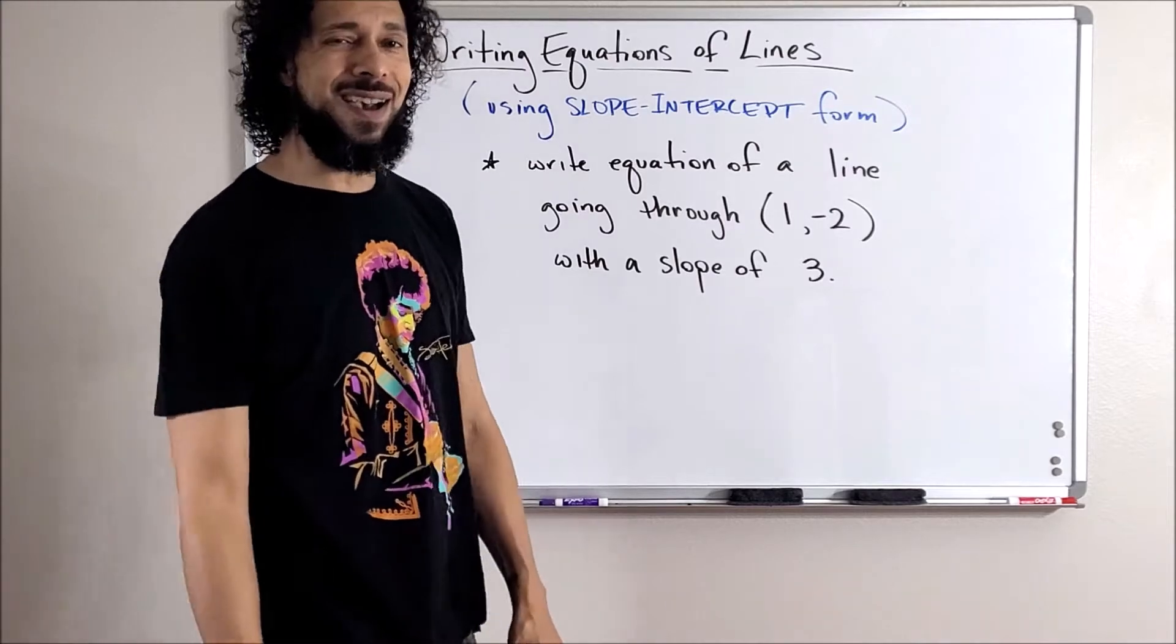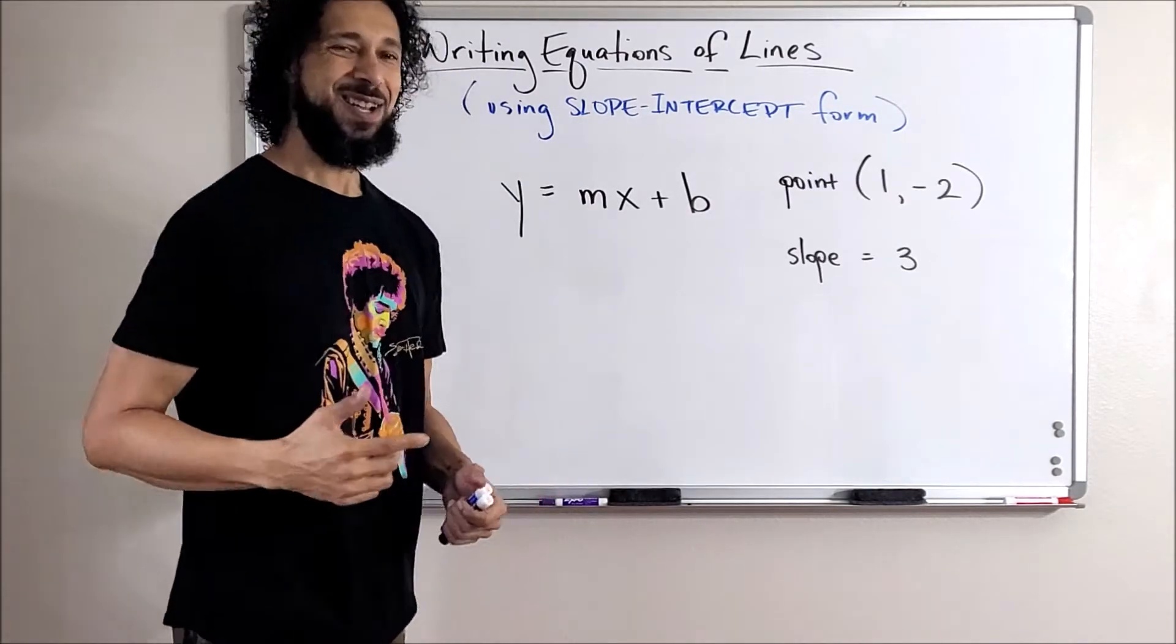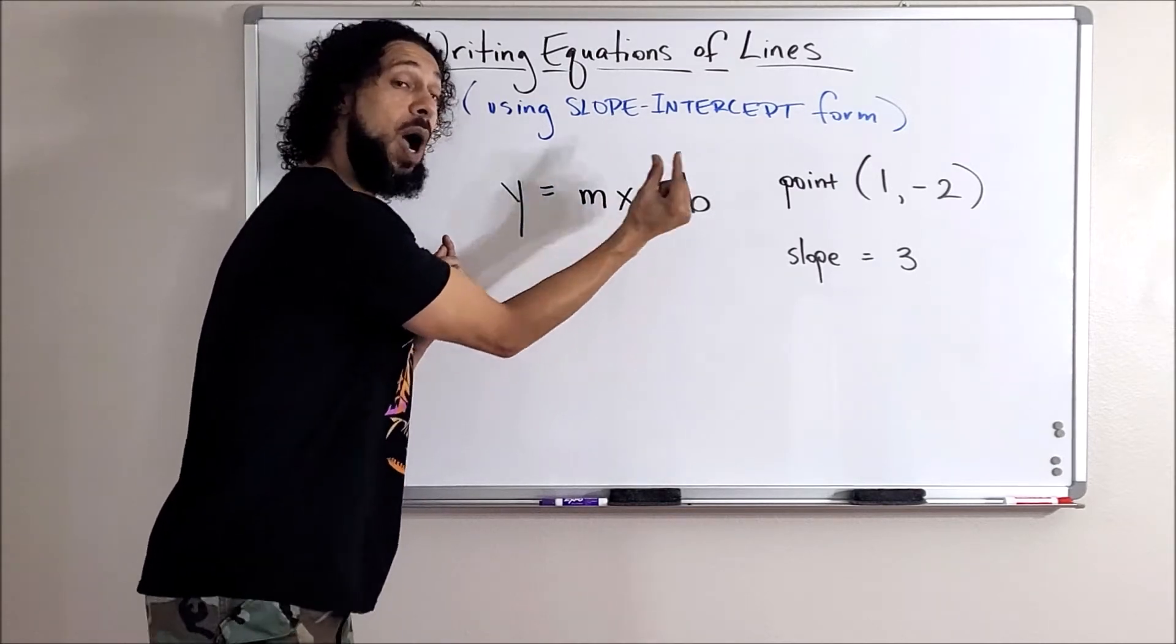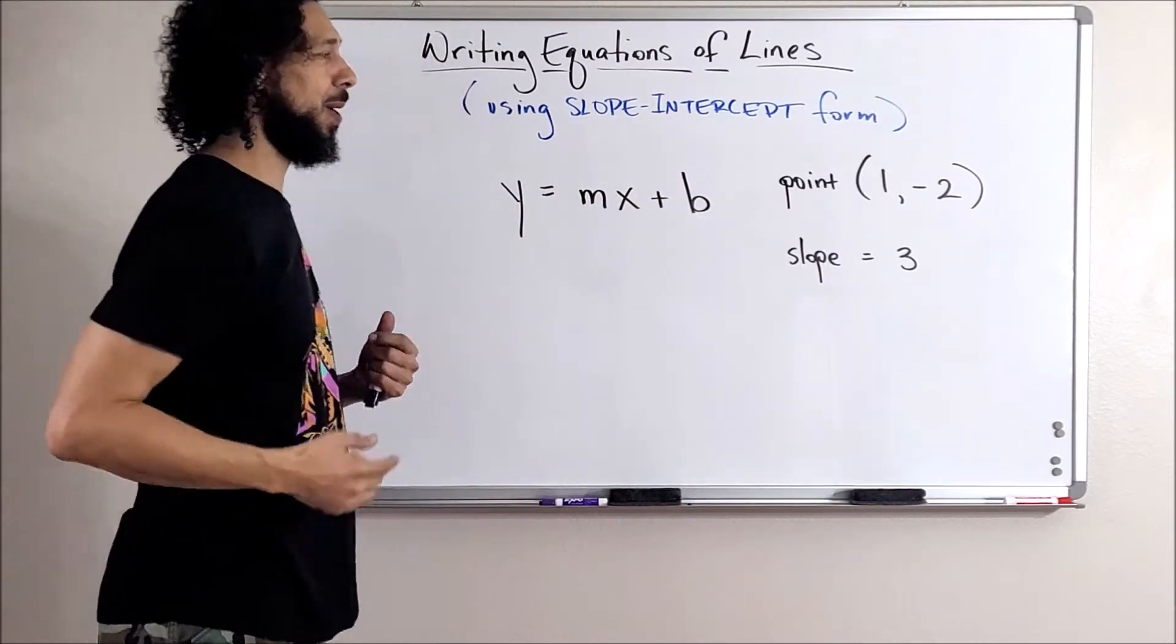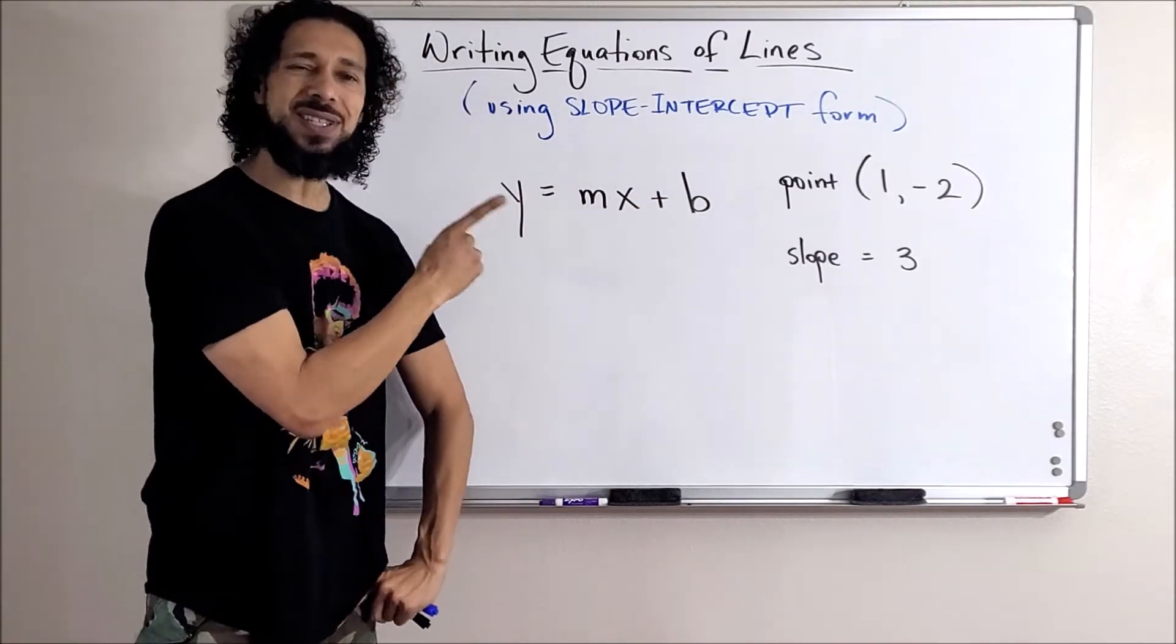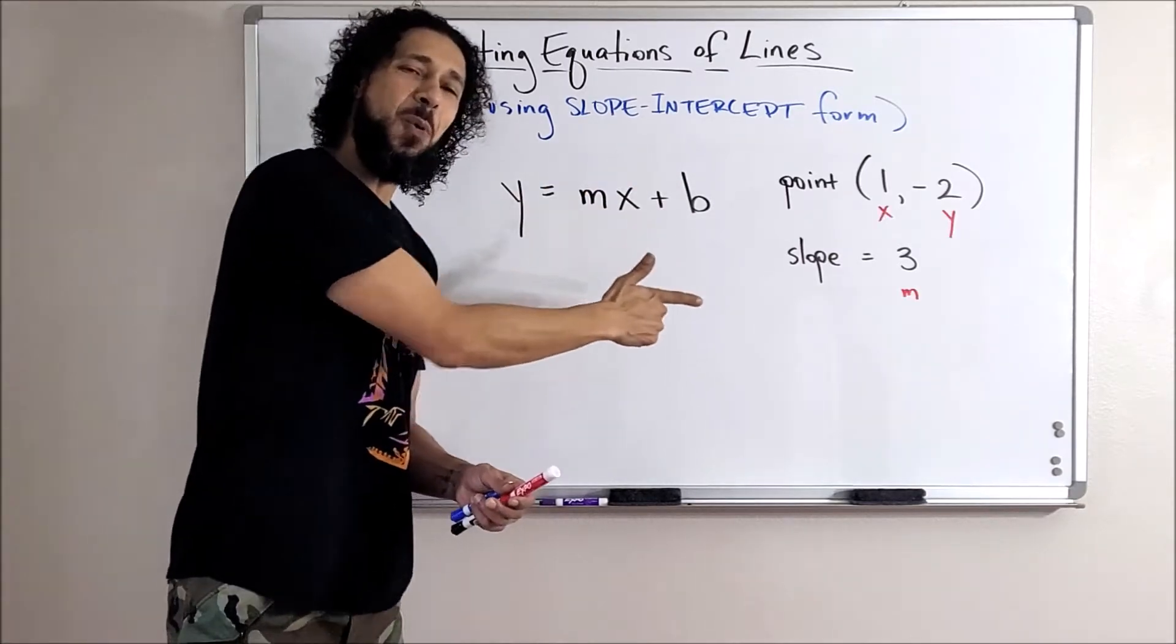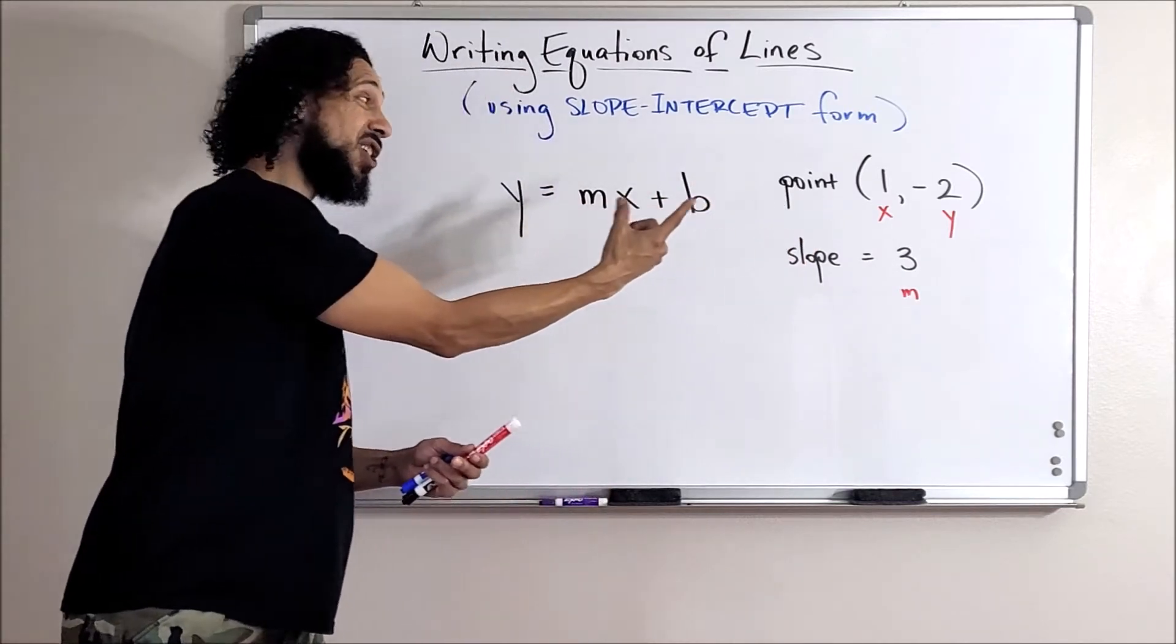Let me clean this up a little bit. Remember slope intercept form looks like this: this would be the equation of my line. The slope would go here and y-intercept would go here. I have a slope but I don't have the y-intercept. But can I use this information? Yeah I could. Watch this. Remember what that point is? That point is an x and a y coordinate. Can I just replace this x and this y with those numbers? Yes.